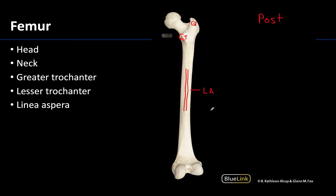The femoral condyles are also clearly visible from this posterior view. The head of the femur is distinctive — almost a perfect ball — and always faces medially as it articulates with the acetabulum of the hip joint. Just distal to the head is the neck of the femur, which is a relatively weak area susceptible to fracture due to its reduced size compared to the rest of the femur.